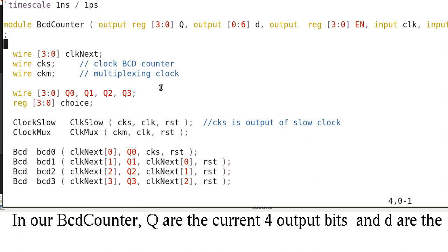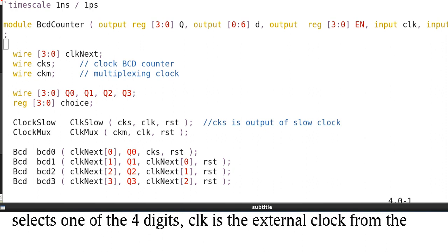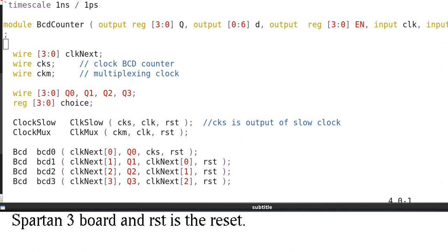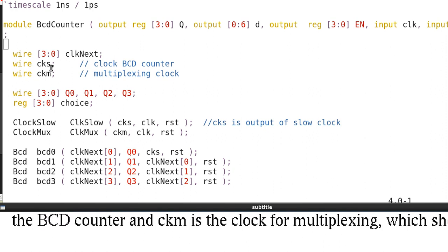In our BCD counter, Q are the current 4 output bits and D are the outputs to the 7-segment LED. Output EN is the enable for one of the 4 digits. CLK is the external clock from the Spartan 3 board and RST is the reset. In the module, CKS is the slow clock input to the first stage of the BCD counter.